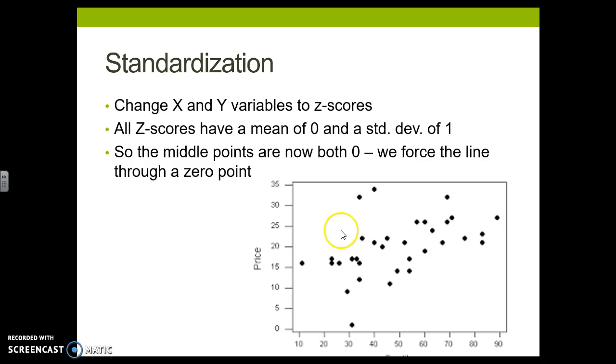What that does is it changes my axis. So instead of my axis being here, it is now straight in the middle. So here and here. And my 0, 0 point is right here. That will make my line go through the 0 point. Which doesn't change the relationship, but it can change the interpretation.